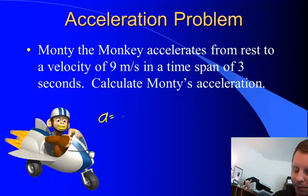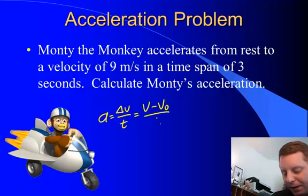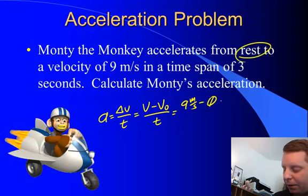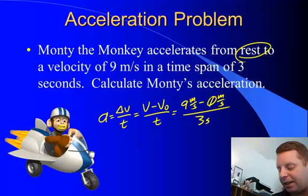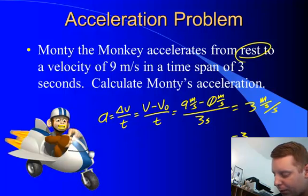Well, acceleration is Δv over t. Delta anything is its final value minus its initial value divided by the time. The final velocity was 9 meters per second. The initial velocity, it said he was at rest, so that's 0 in a time of 3 seconds. 9 minus 0 is 9. 9 divided by 3 is 3. That will leave us with an acceleration of 3 meters per second per second, or 3 meters per second squared.